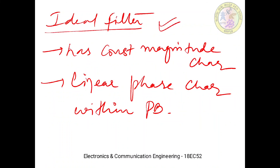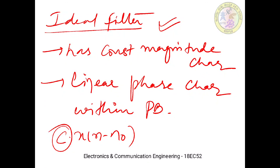To summarize, any ideal filter has two key properties within its pass band: constant magnitude characteristics (due to the amplitude scaling c) and linear phase characteristics (due to the constant delay n₀ shared by all frequency components). These are mathematical idealizations that are not practically realizable. In the next session we will look at the characteristics of practical frequency selective filters.